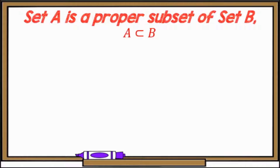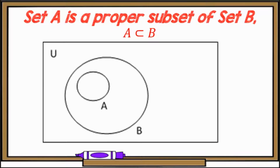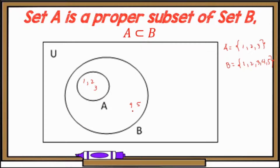Now let's look at proper subsets. Set A is a proper subset of set B, meaning A is inside B. All elements of A can be found in B. For example, set A is the set of numbers 1, 2, 3, but now set B is the set of numbers 1, 2, 3, 4, and 5. In the Venn-Euler diagram, 1, 2, 3 will be inside circle A, while 4 and 5 will be outside set A but still inside set B.